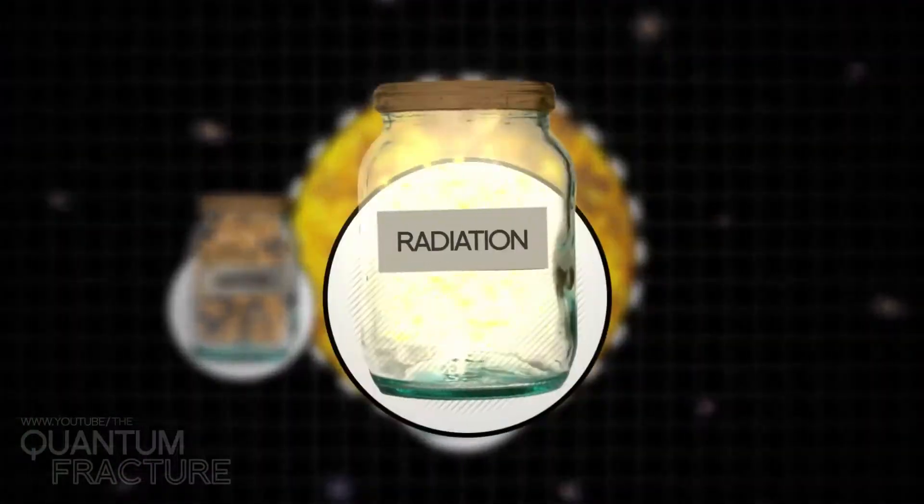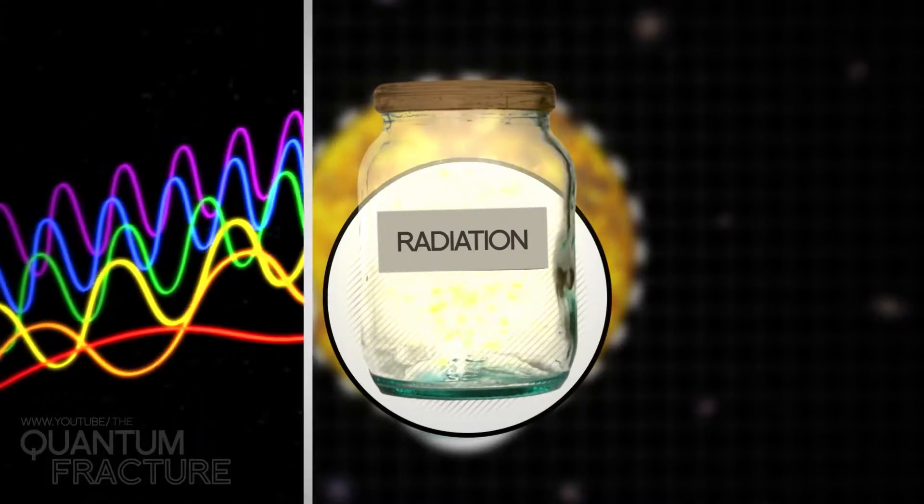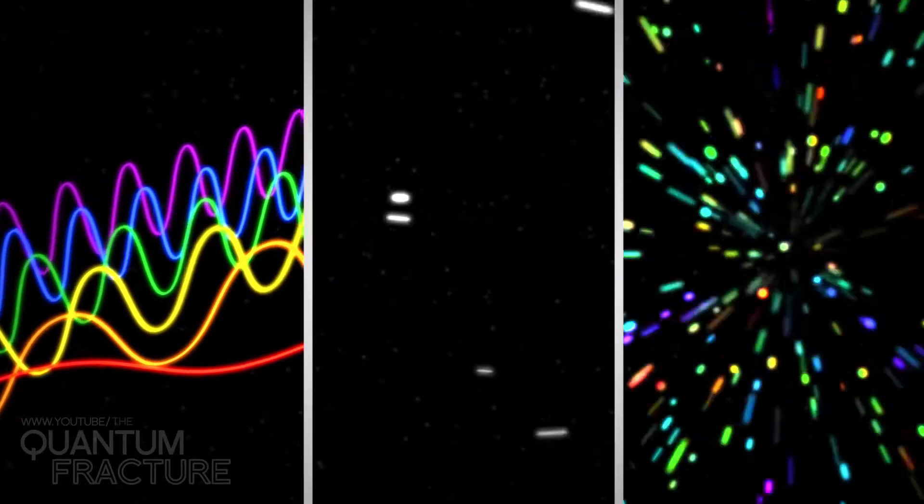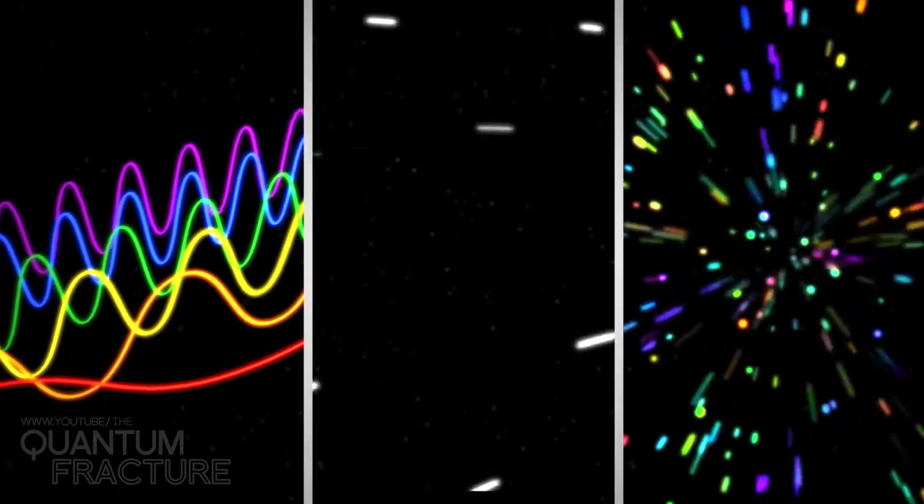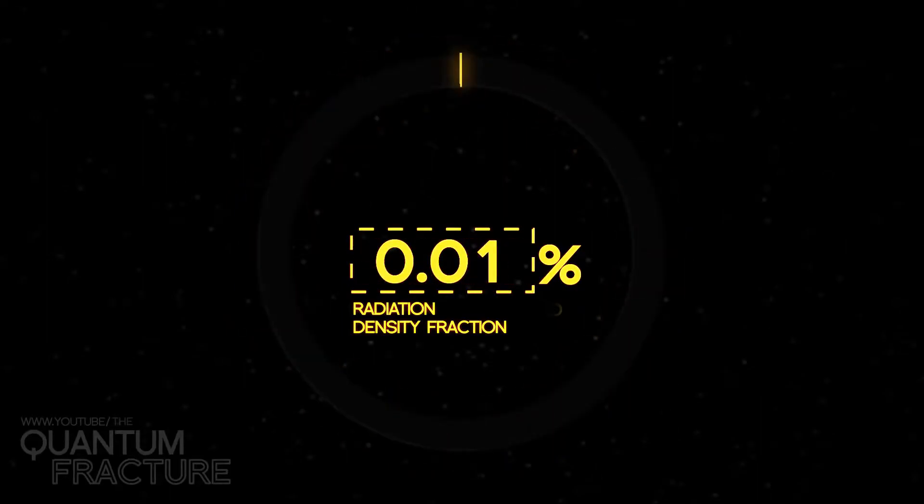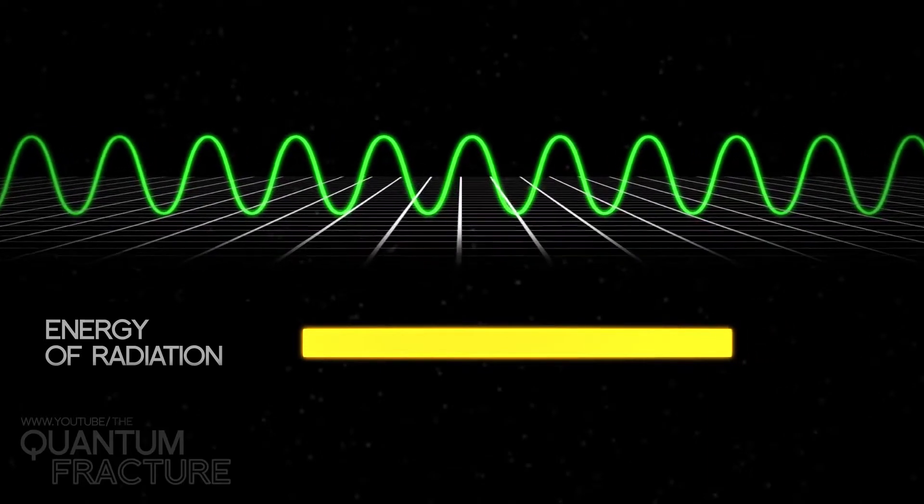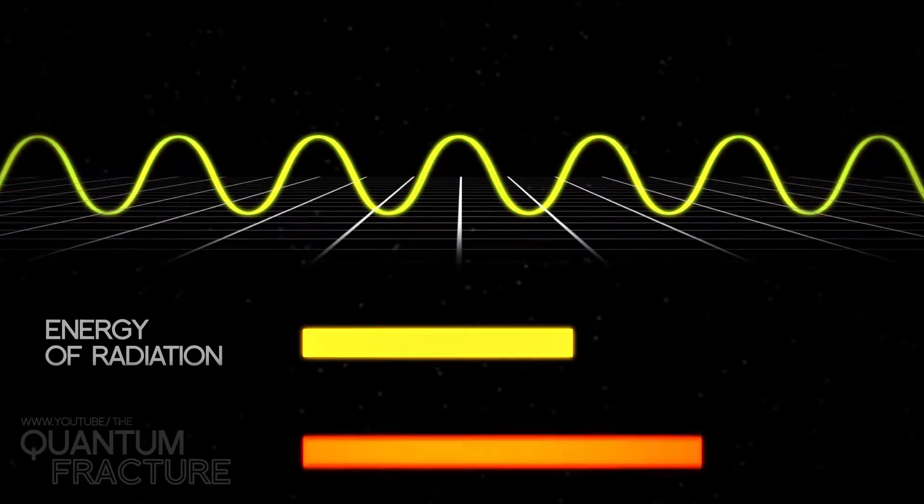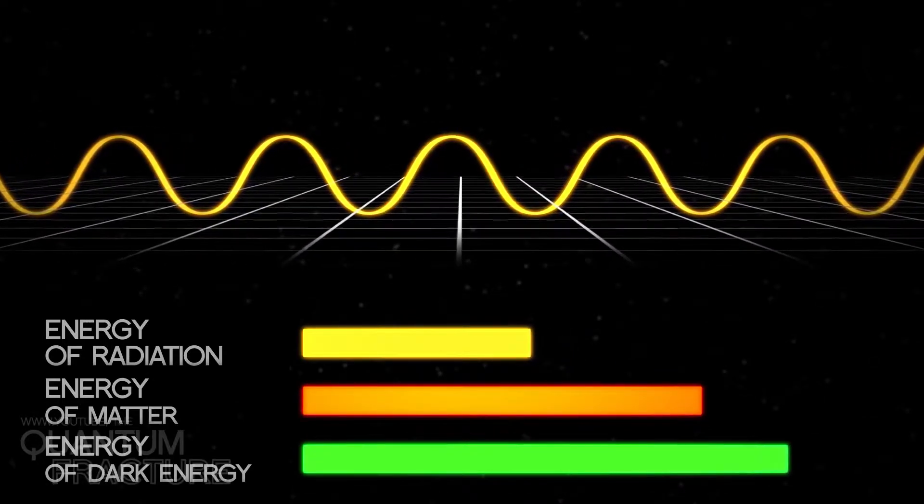The final ingredient is radiation. Here we find electromagnetic waves, neutrinos, and other particles that travel at close to the speed of light. Speedy stuff. I won't dwell on this because, spoiler alert, the density of radiation in our universe is very low. This is due to the fact that the universe's expansion stretches wavelengths, reducing radiation energy and making it less relevant than other substances.